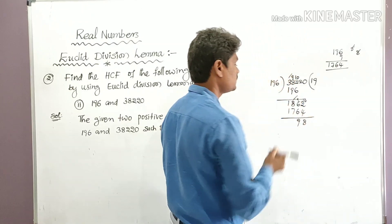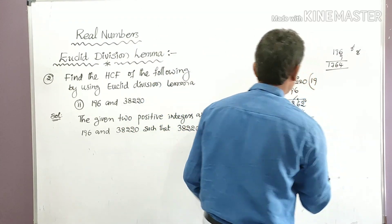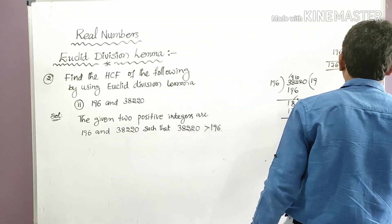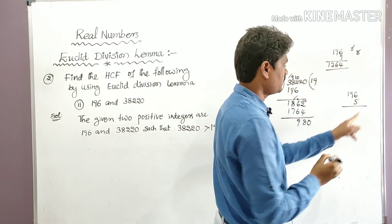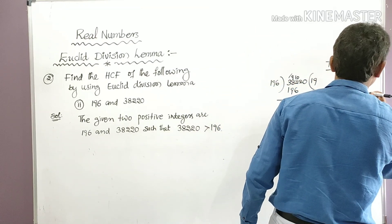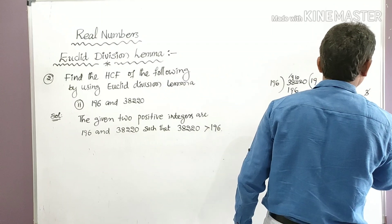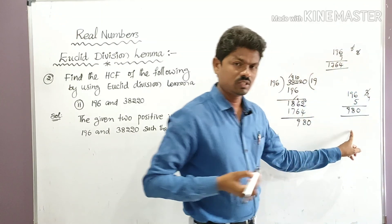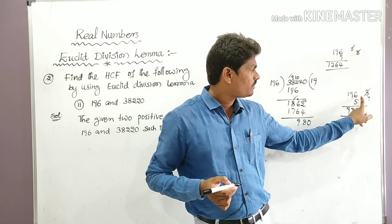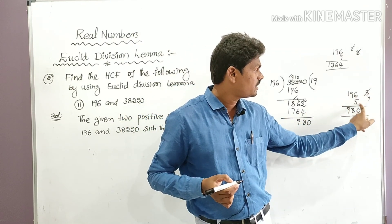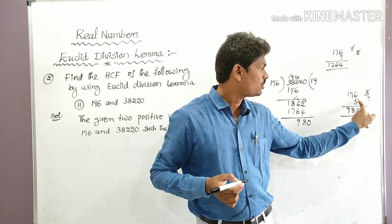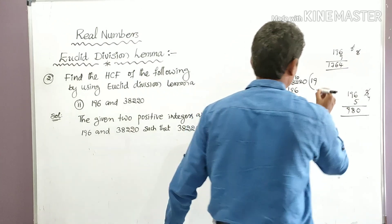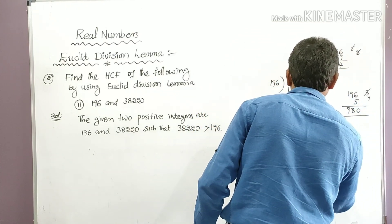We need to check how many times 196 goes into 980. Check: 196 × 5 = 980 exactly. So 5 times, and the remainder is 0. The full quotient is 195.